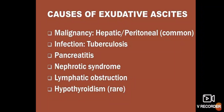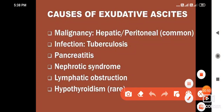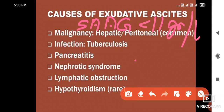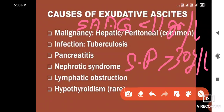Ascites is of two types: exudative and transudative. In exudative ascites, the Serum Ascites Albumin Gradient is less than 11 grams per liter, and serum proteins are more than 30 grams per liter. Causes of exudative ascites include malignancy, hepatic and peritoneal causes, infections like tuberculosis, pancreatitis, nephrotic syndrome, lymphatic obstruction, and hypothyroidism, which is rare.